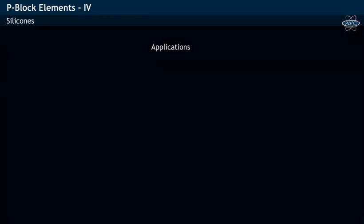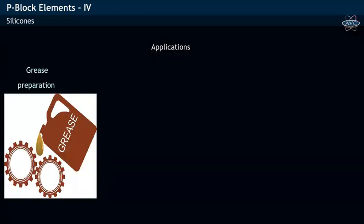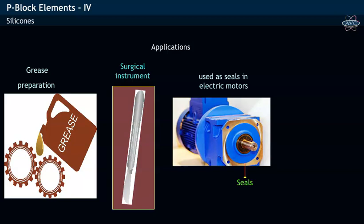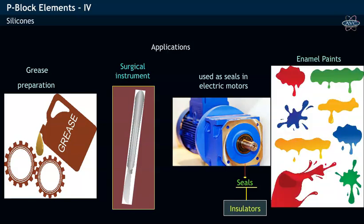Silicones are used in the preparation of grease, surgical instruments, and as seals in electric motors by acting as insulators. Silicones are also used in enamel paints.